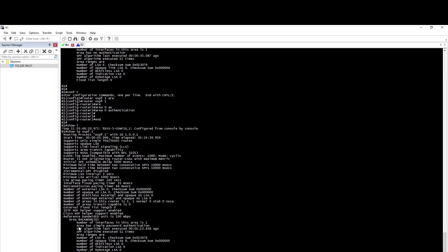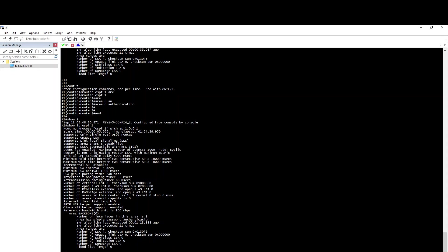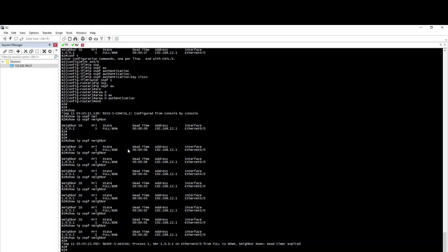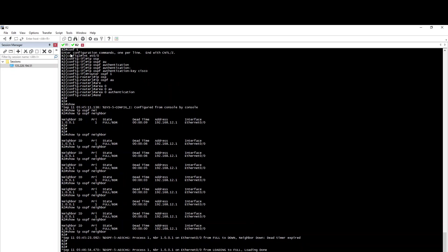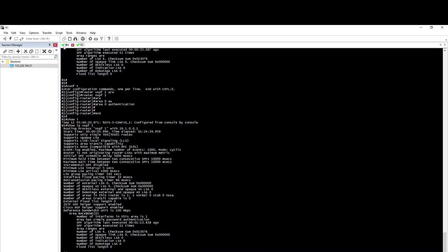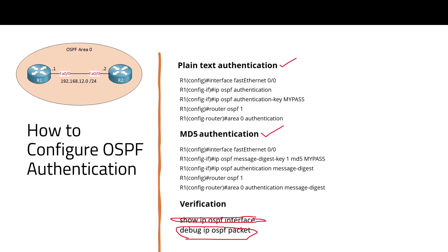Now we have to do simple authentication. We have to enable simple plain text. Second, we have to enable MD5. We will verify on the same interface. We will enable IP OSPF authentication. We will enable the message digest key.